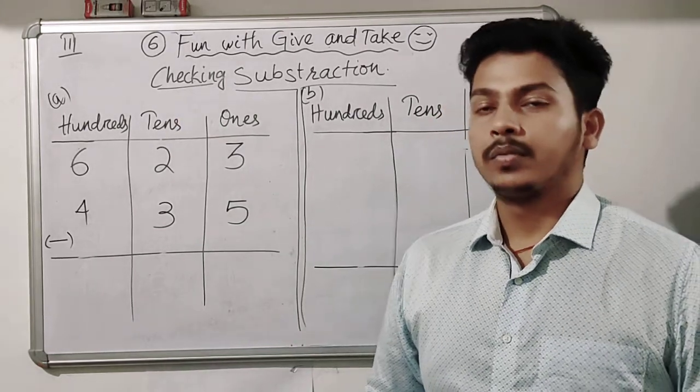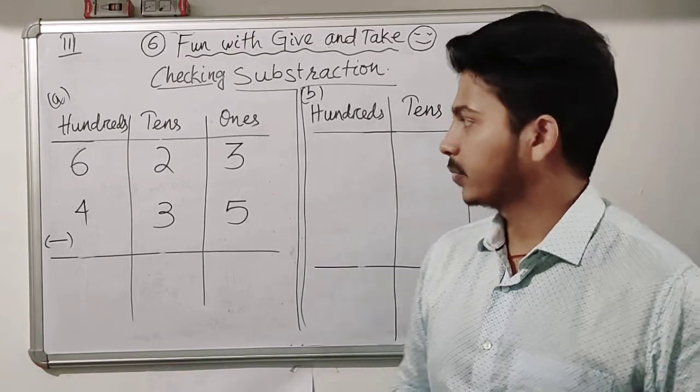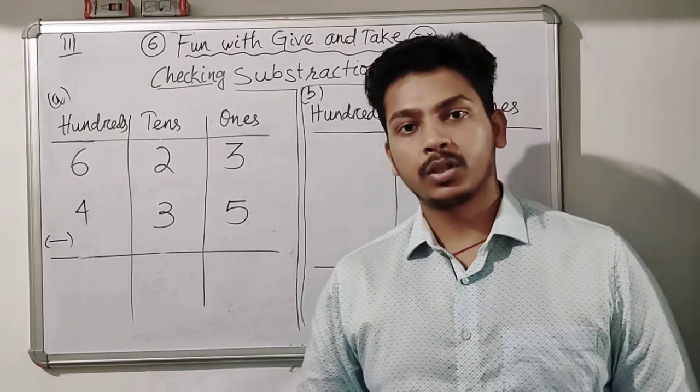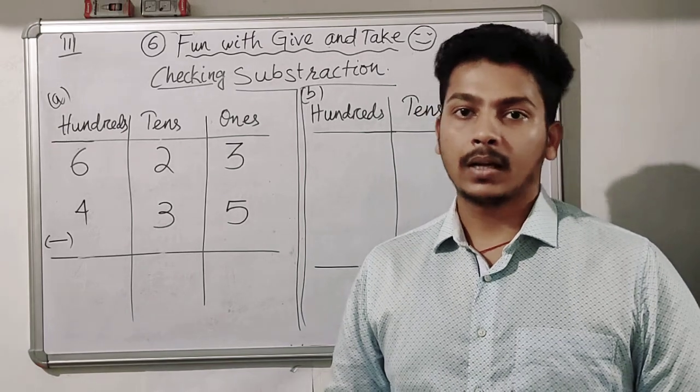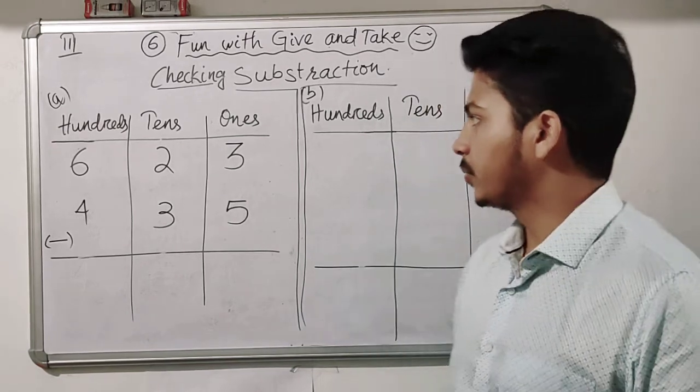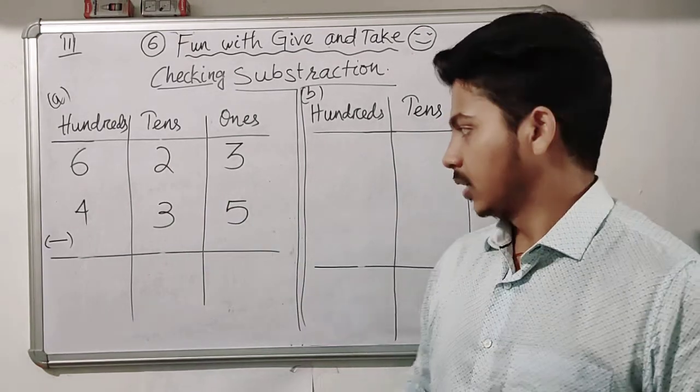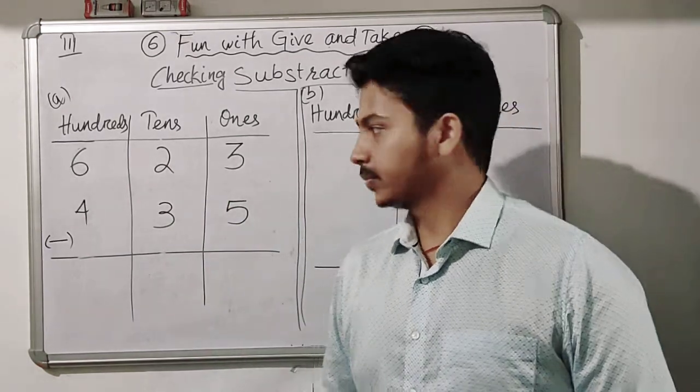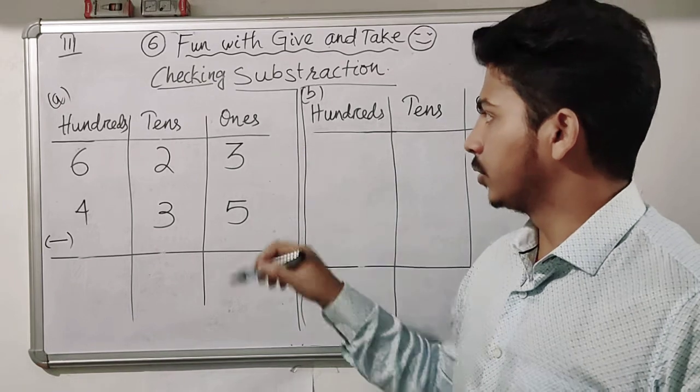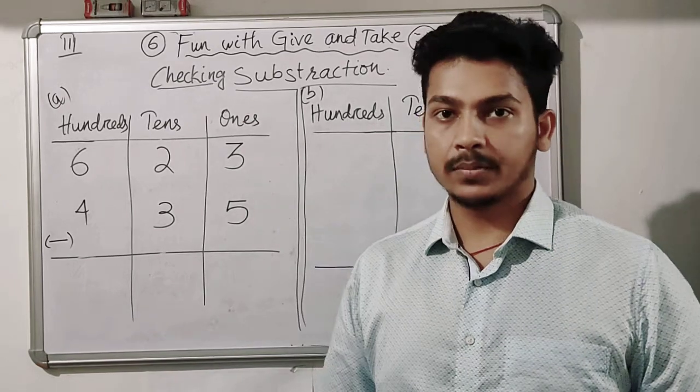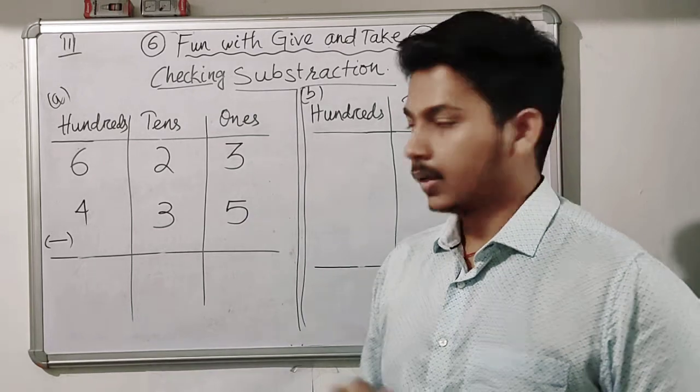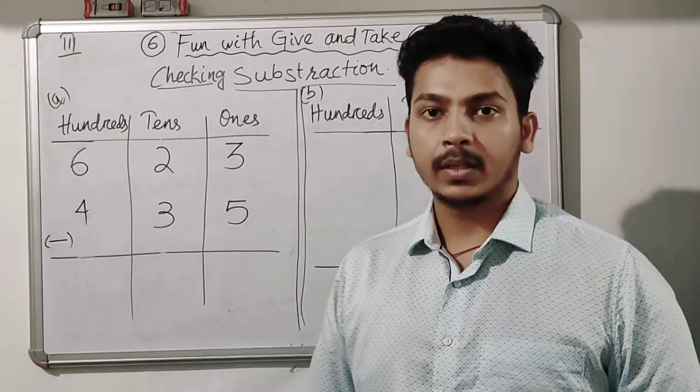Today we are going to learn how we will check subtraction, whether it is correct or not. Let's find out. Here is a subtraction problem. Let's work on this subtraction first. First we will do the ones place, so it is three minus five. Is it possible? No.